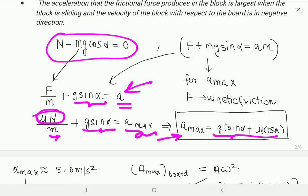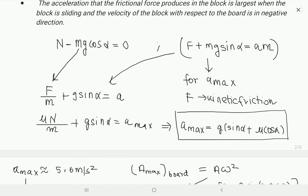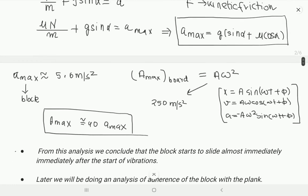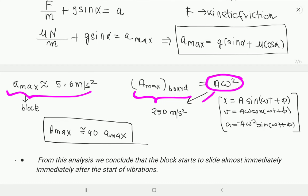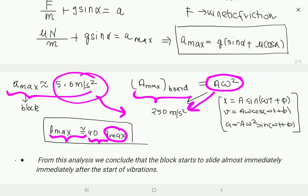This is the peak value of the acceleration. Using a calculator, the maximum acceleration of the block is approximately 5.6 m/s², while the maximum acceleration of the plank is A*omega² which is 250 m/s². So the plank's maximum acceleration is about 40 times that of the block — 5.6 is 1/40 of 250.